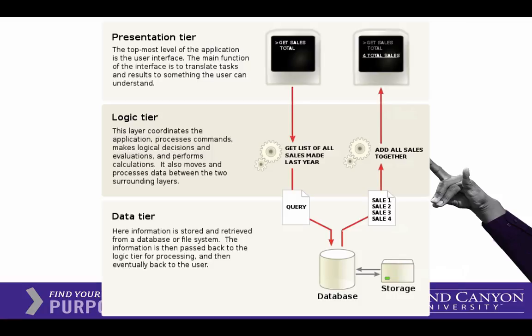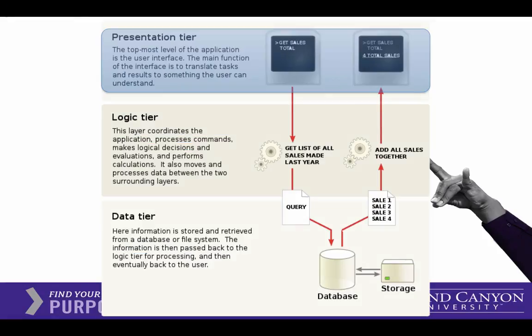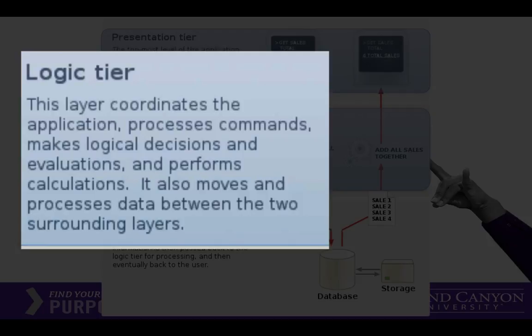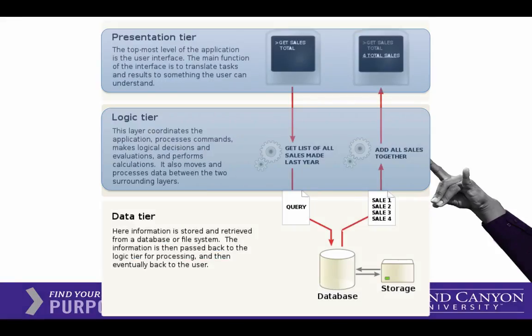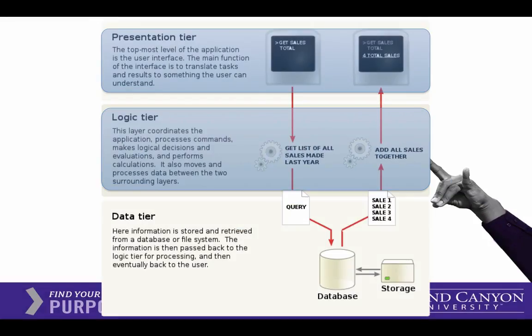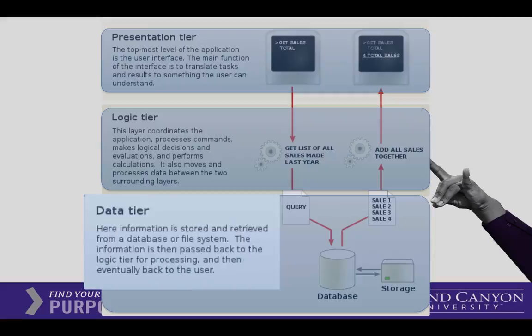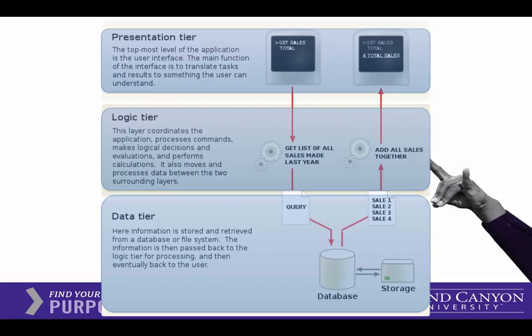Here's another view of some of the layers. The presentation layer is a web page — buttons, forms, and mouse actions. In the logic layer, we're talking about rules like 'give me a list of all sales made last year' or 'add all the sales together' as data comes back from the database. The data tier is where we just have the queries — mostly SQL — getting columns and counting rows in a table.